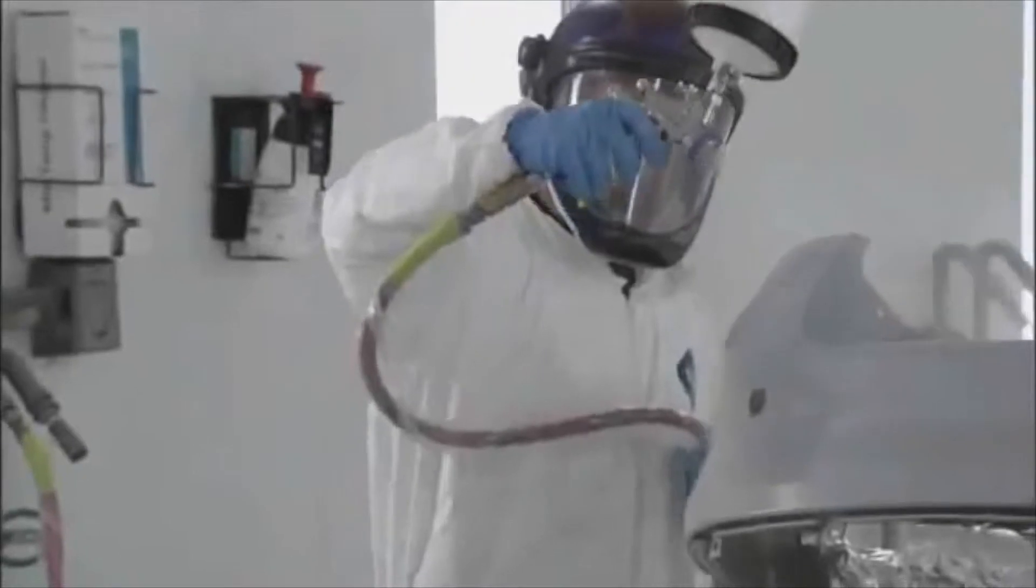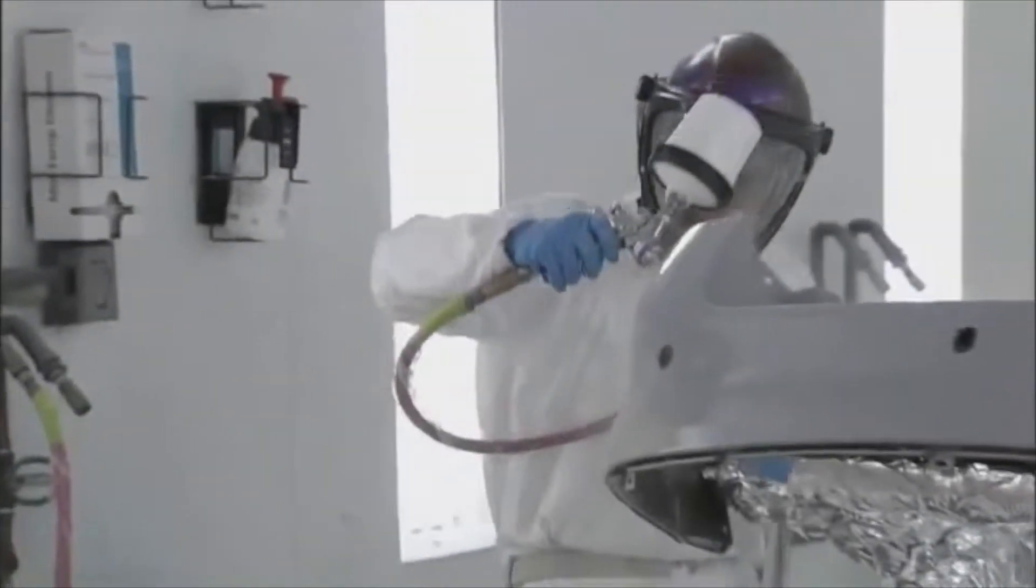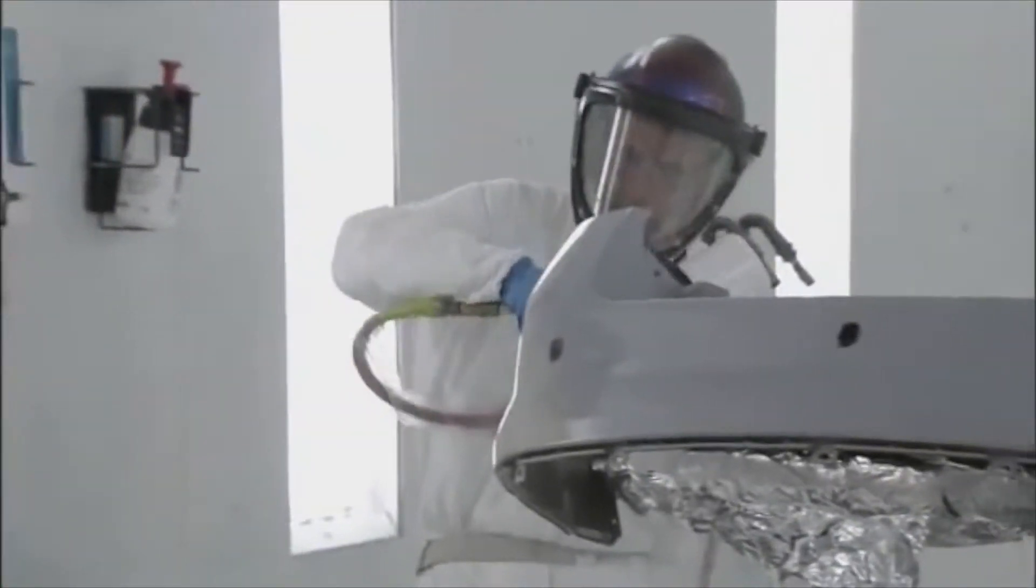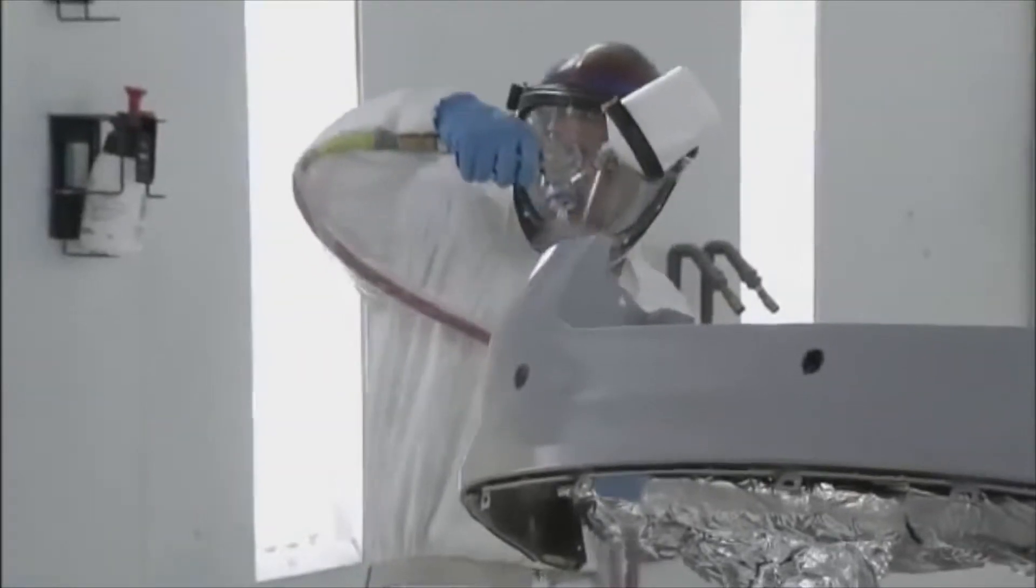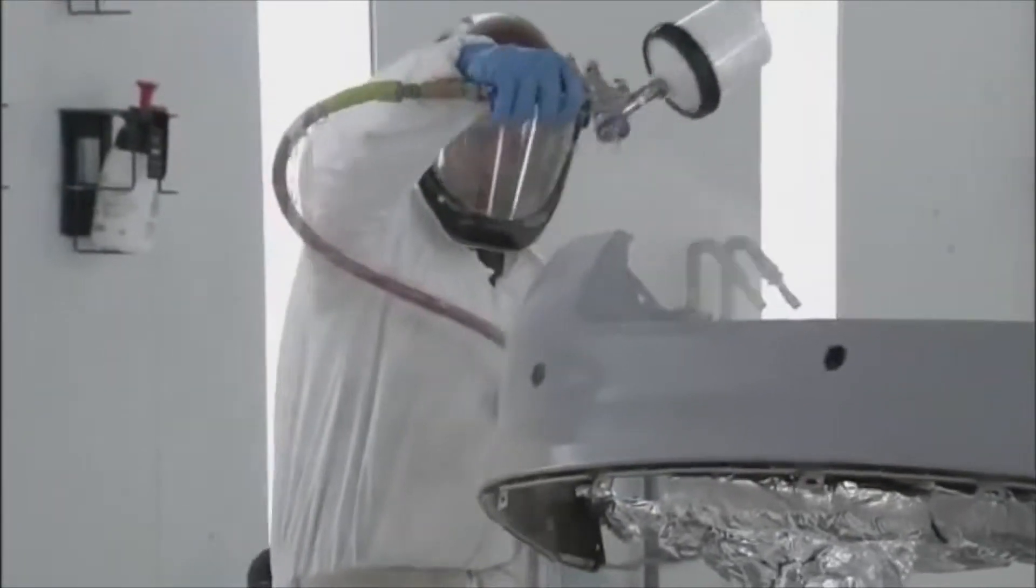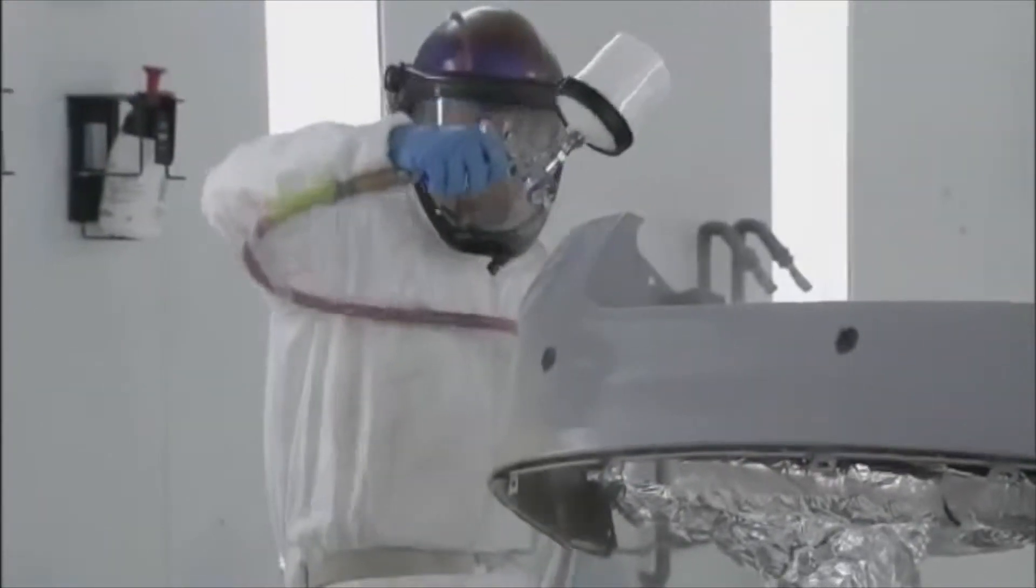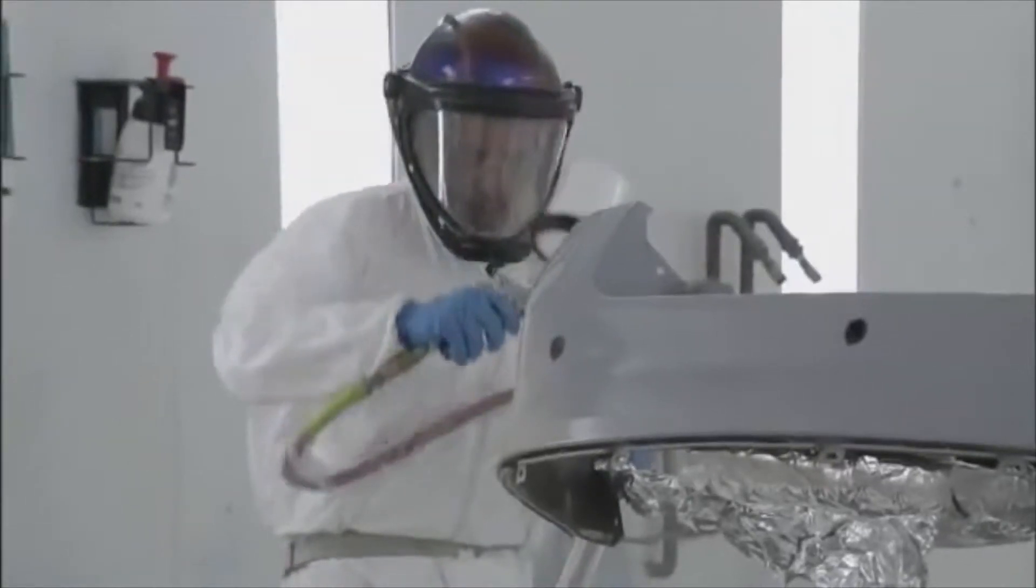Start the blending process for solid and low metallic colors by applying a wet bed of WB2091 Blender over the entire repair panel. Apply the blender in a closed coat covering the entire panel without leaving any dry spots.